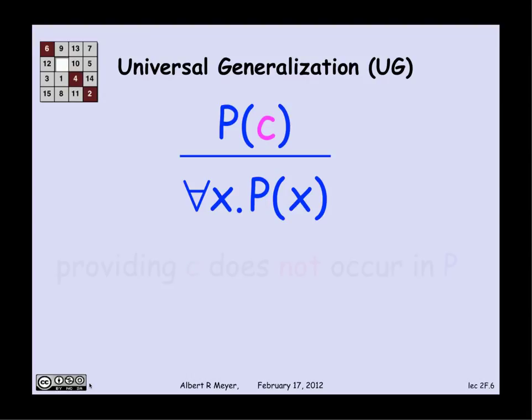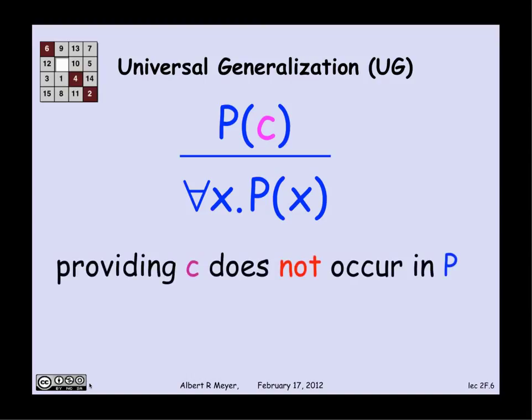So what this is saying is if you've proved P of C for a constant C, then you can deduce that for every x, P of x holds. And this is providing that C does not occur in any other part of the predicate P except where you're talking explicitly about it. It's hard to be more precise about that for now. Don't worry about it. But the idea is you're not supposed to assume anything about C other than it's in the domain and that it has property P. And you can then conclude that everything has property P.